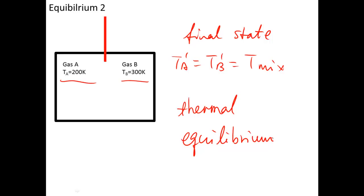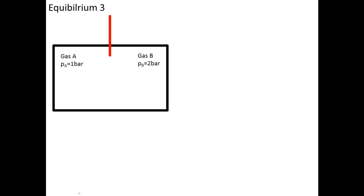After discussing dynamic equilibrium and thermal equilibrium, we can now analyze the third one. At the initial state, the pressures of gas A and gas B are also different. Like concentration and temperature, after both gases completely mix with each other, the pressure of gas A and the pressure of gas B will reach their own corresponding values at the final state and then do not change anymore. So the system reaches mechanical equilibrium.